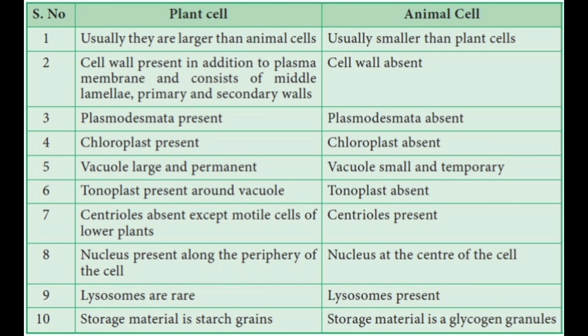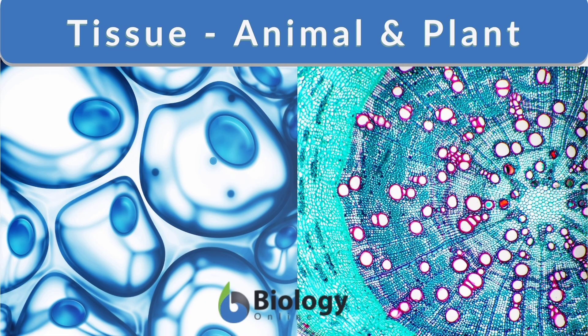The storage material in plant cells is starch grains, while the storage material in animal cells is glycogen granules. The last small part remaining in the chapter is the topic of tissue.